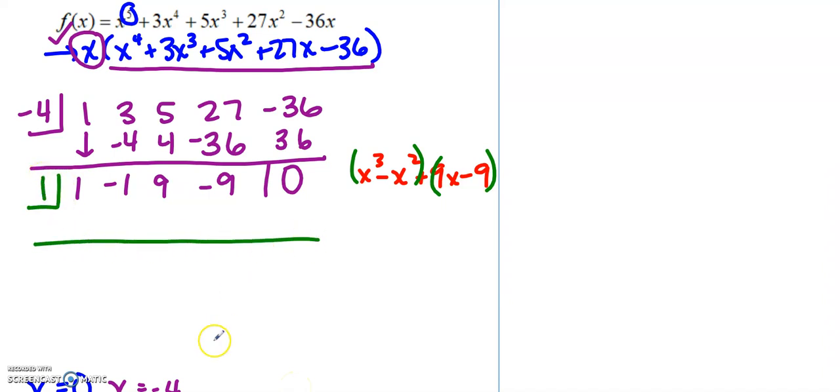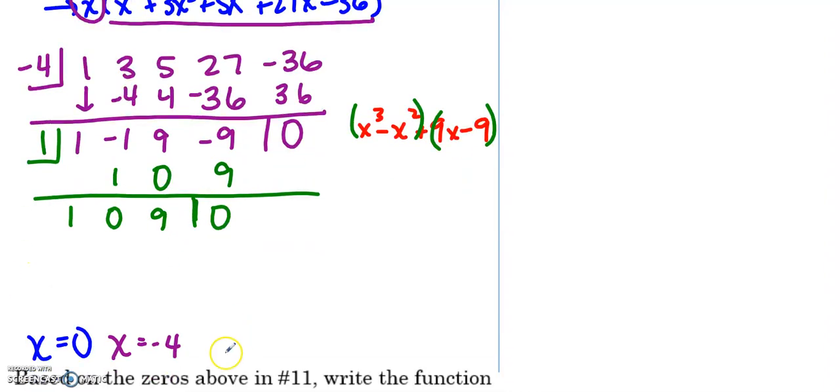1 in the synthetic box. Bring down the 1. 1 times 1 is 1. This will be 0. 0, this will be 9. 1 times 9 is 9. I get a result of 0 for a remainder. So I just found that x equals 1 is a 0.